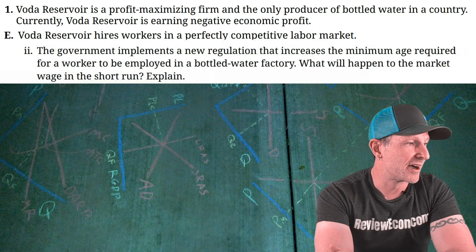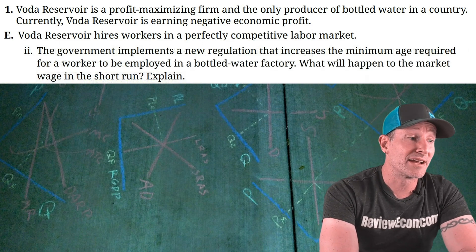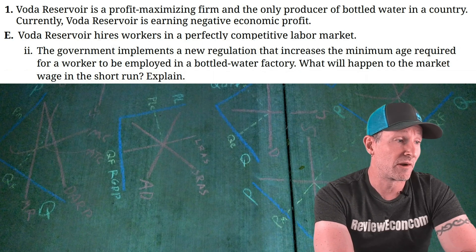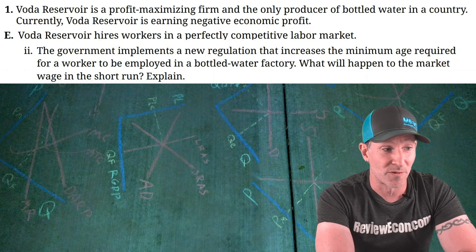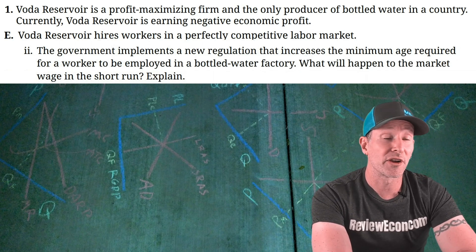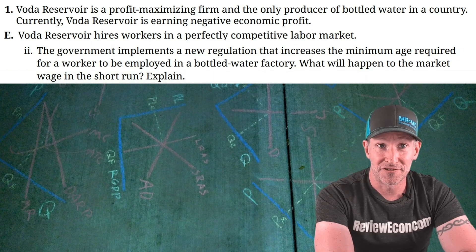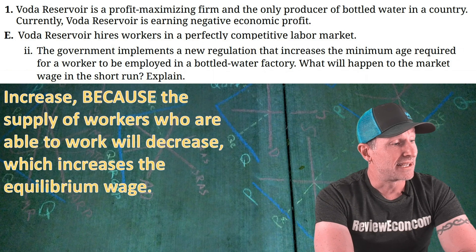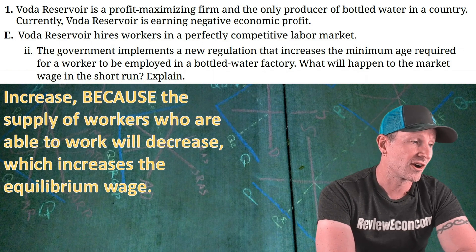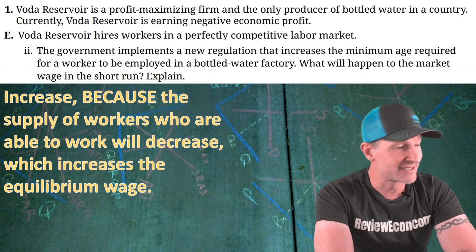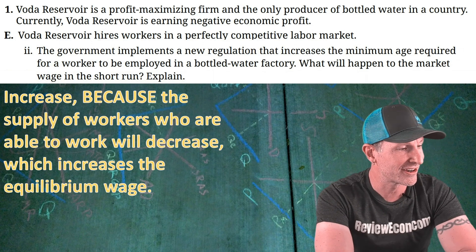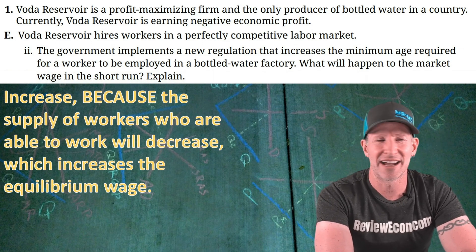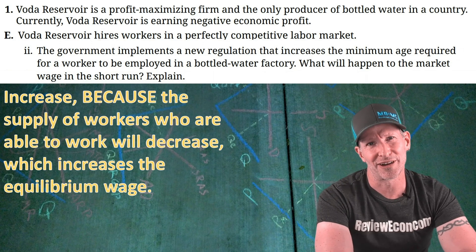For part E double I: the government implements a new regulation increasing the minimum age required to work in the bottled water factory. What will happen to the market wage in the short run? My answer: increase, because the supply of workers who are able to work will decrease — a decrease in labor supply which increases the equilibrium wage. As long as you have that supply decrease in the labor market, you're going to be good.